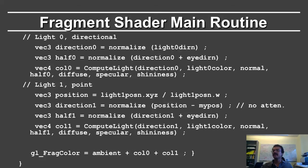Coming back to the fragment shader: for the directional light, you normalize the light direction, compute the half vector by adding the light direction and the eye direction and normalizing it, then compute the light contribution. For the point light, you de-homogenize the location of the light, compute the direction to the light, compute the half vector, and call the color function. Note there's no attenuation here. Study this code carefully — your homework 2 code will very likely be based on it, but slightly more general.